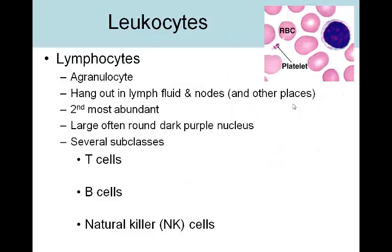Last but not least for the leukocytes are the lymphocytes. Like the monocytes, lymphocytes are agranulocytes — they don't possess very many granules in their cytoplasm, at least not as many as neutrophils, basophils, and eosinophils. They're the second most abundant of all the leukocytes, after neutrophils. Lymphocytes have a very large, very round, very dark purple nucleus that often appears to take up the whole cell, with just a thin sliver of pale cytoplasm around it. They get their name from the fact that they're found not only in the blood but also in the lymphatic system, in lymphatic fluid and lymph nodes.